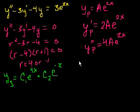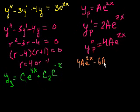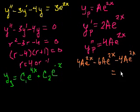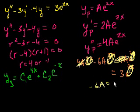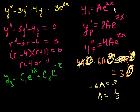Substituting into the equation: 4A·e^(2x) minus 3 times 2A·e^(2x) minus 4·A·e^(2x) equals 3e^(2x). Since e^(2x) is never zero, we can divide both sides by it. On the left, 4A and minus 4A cancel, leaving minus 6A equals 3. Dividing both sides by 6 gives A equals negative one-half. So our particular solution is y_p = −(1/2)e^(2x).